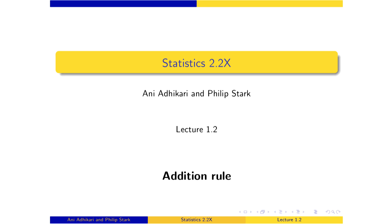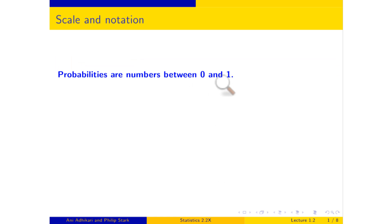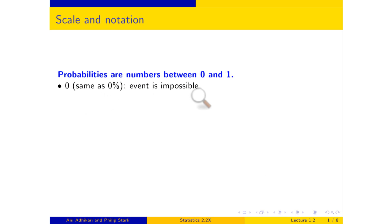Let's start computing some probabilities. First, the scale of measurement. Probabilities are conventionally measured between 0 and 1, that's 0% to 100%, a percent scale. If something has probability 0, it cannot happen. It's not that it's just unlikely — it is impossible, physically not possible.